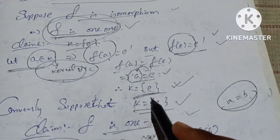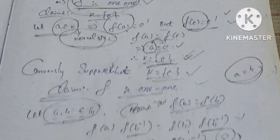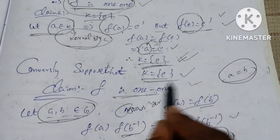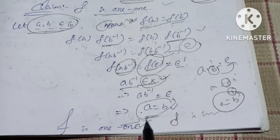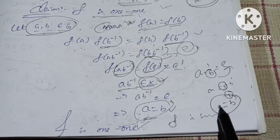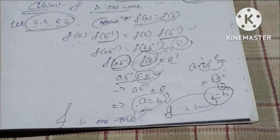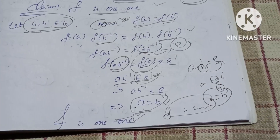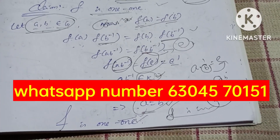Therefore, from F(A) equals F(B) we get A equals B, so F is one-to-one. Therefore F is an isomorphism. In the first direction F is one-to-one implies K equals E, and in the converse K equals E implies F is one-to-one — therefore F is an isomorphism. This is the complete solution.